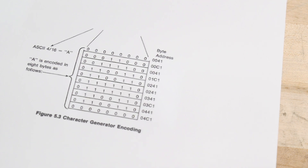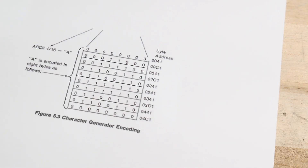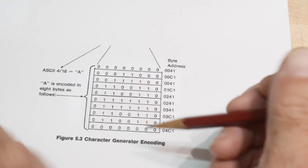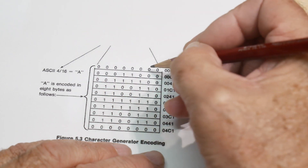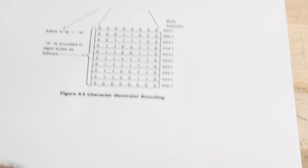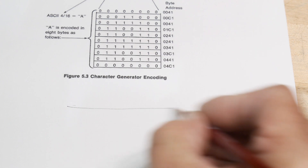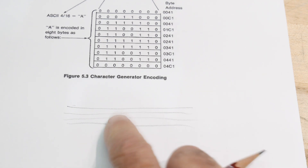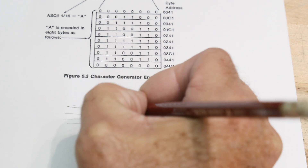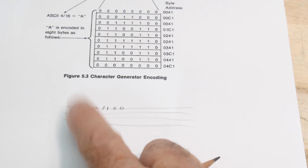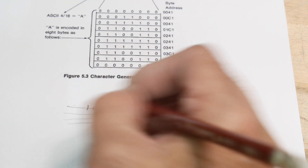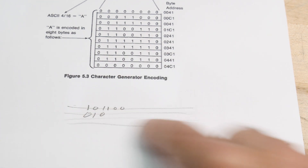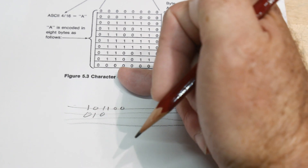How do you turn a character into something you can display on screen? You do that with character generation. A television is raster-scanned — you sweep a line, then another, like weaving a tapestry. You clock out 1s and 0s: a 1 is white and a 0 is black. So if you have the letter A — which is 0x41 hex — you want 1s in certain pixel locations and 0s in others across 10 scan lines to build up that character.